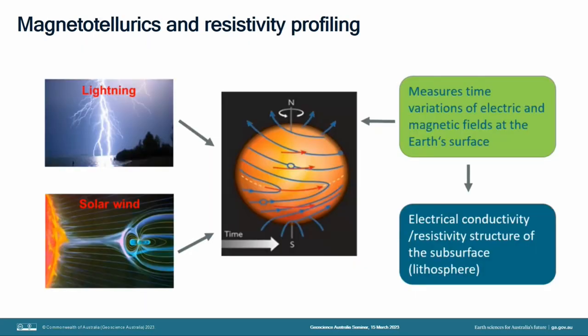The next thing I'm going to talk about is magnetotellurics. What you have is lightning, solar flares, etc., which interact with Earth's atmospheric magnetic field and cause perturbations in that field. You take out an instrument, sit it going for about three months, and it records all of these perturbations and the resulting magnetic field changes. It then calculates the electrical conductivity profile with depth — so it tells you how conductive the crust and even the mantle is with depth. These are three of the main data sets I'm going to be talking about.